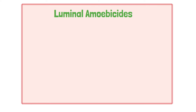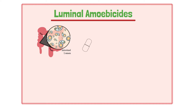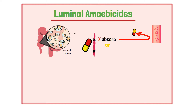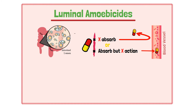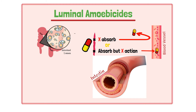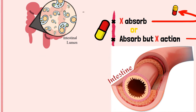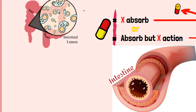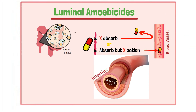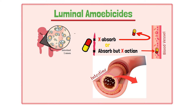Luminal amoebicides act on the parasite in the lumen of the bowel. These agents do not absorb into the blood. Some get absorbed but do not show any systemic amoebicidal effect. Most of the amoebic cells remain in the intestine before and after invasive infection, so it is important to get rid of these intestinal amoebas as well. Otherwise the patient will be at risk for another case of disease.